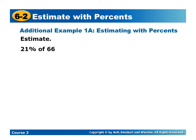So here, I'm going to take 21% of 66. Well, 21% is not a really good compatible number to work with, so what I'm going to do is I'm going to change that 21% to 20%. And I know that 20% is the same as 20 out of 100, or 1 fifth.